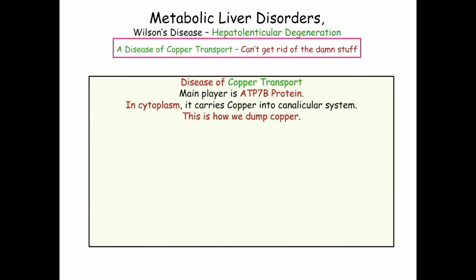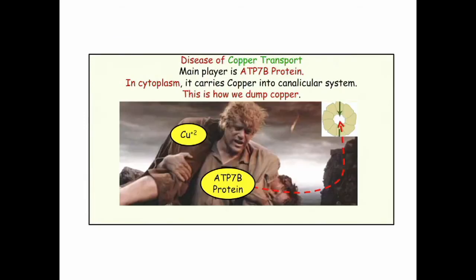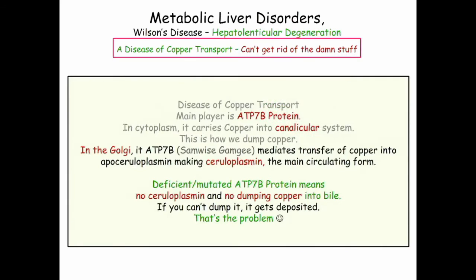Wilson's disease is a disease of copper transport, and the main player is the ATP protein. In the cytoplasm, it carries copper and delivers copper into the canalicular system — into the bile. That's how we get rid of copper. Think of Samwise Gamgee carrying Master Frodo: Master Frodo has to deliver the ring to Mount Doom but can't carry it anymore, so Samwise carries him up. In this analogy, Samwise is the ATP protein carrying Master Frodo — the copper — into the bile canalicular system.